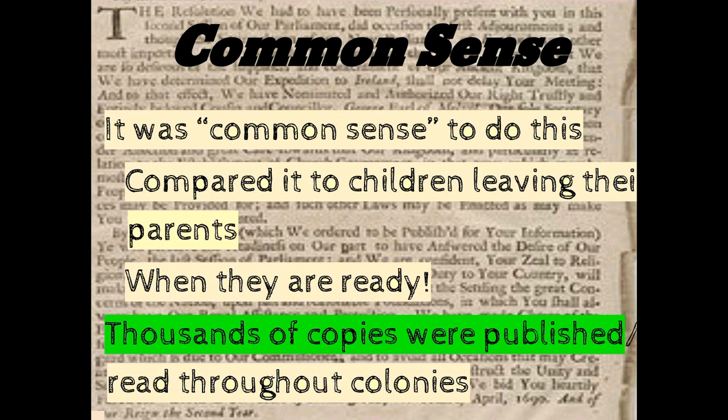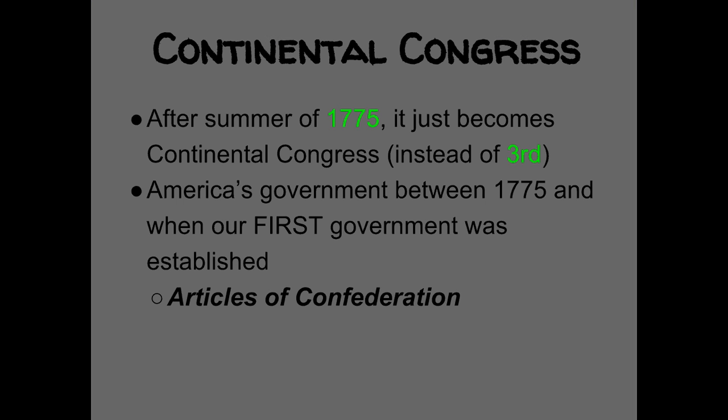By the summer of 1775, it just becomes 'the Continental Congress' — we stopped saying the First Continental Congress or the Second Continental Congress. This is basically America's government in these war years between 1775 and the first government we're going to create, called the Articles of Confederation. So this Continental Congress is our Revolutionary War government.